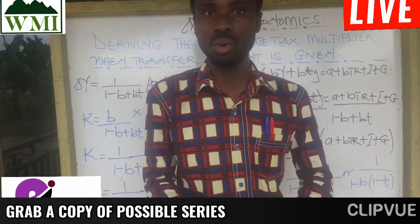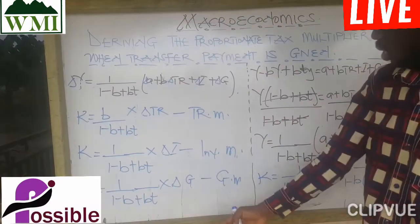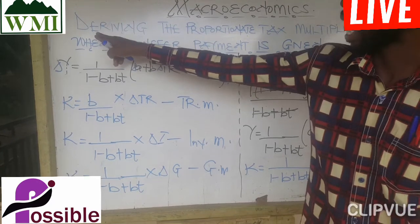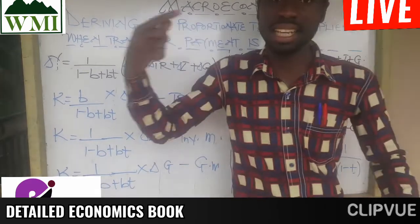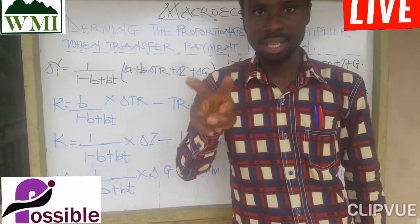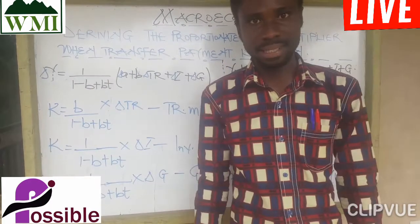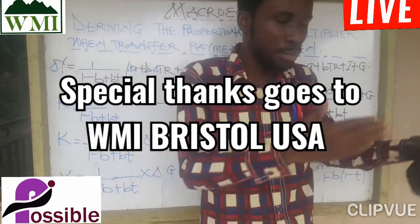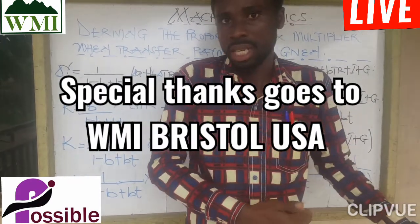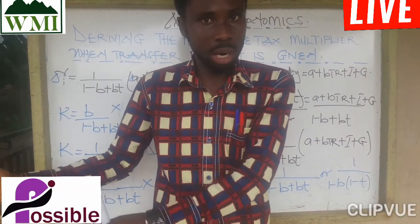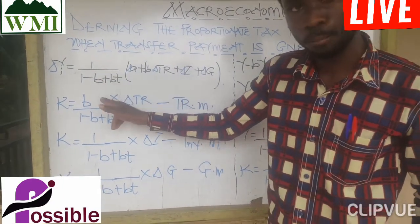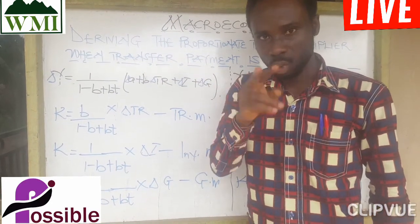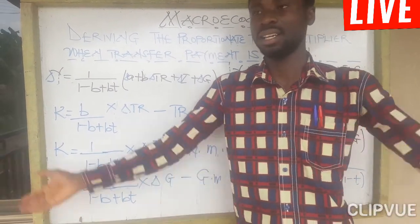Once again, my name is Alexander Oseko, I am Possible from Ghana. In our next lecture, we are going to look at how to derive the multiplier when both proportionate tax and lump sum tax are given together. When lump sum tax alone is given the multiplier is 1 over (1 minus B), and when proportionate tax is given it is 1 over (1 minus B plus BT). Next lecture we explore what happens when both taxes are given together.